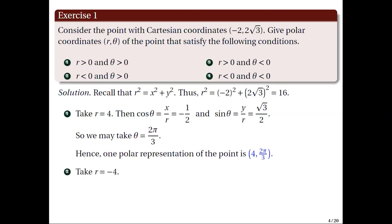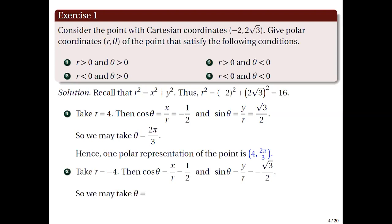For the second case, we can take r equal to negative 4. Solving the trigonometric equations, we have cosine theta equal to one half and sine theta equal to negative square root of 3 over 2. From these, we can take theta equal to 5 pi over 3. Hence, another polar representation of the point is negative 4, 5 pi over 3.